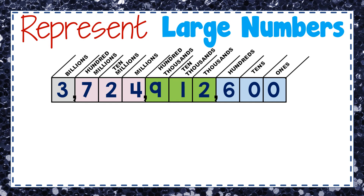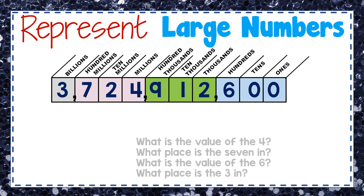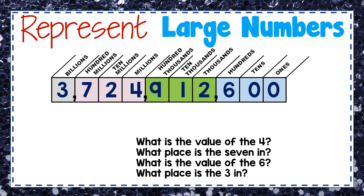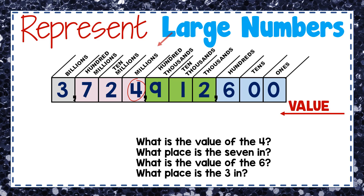Here's another number on the place value chart: three billion, seven hundred twenty-four million, nine hundred twelve thousand, six hundred. Let's answer some questions. What is the value of the four? The four is in the millions place, and it has a value of four million.